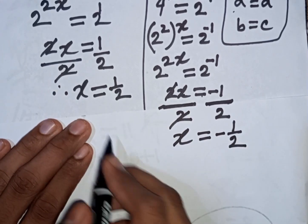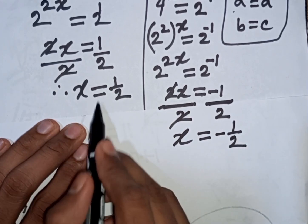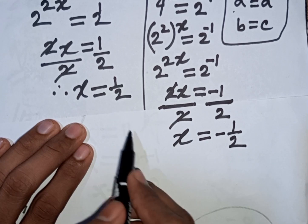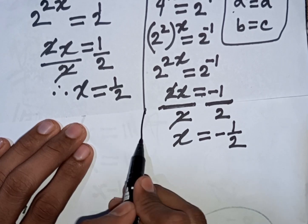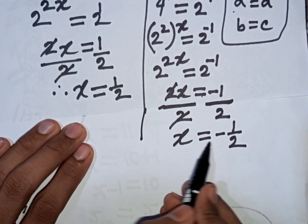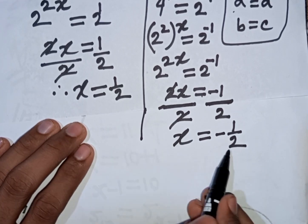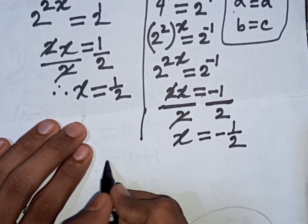So our final answer is x equals 1 over 2 or x equals minus 1 over 2.